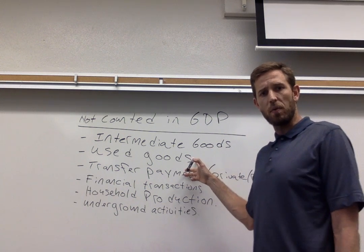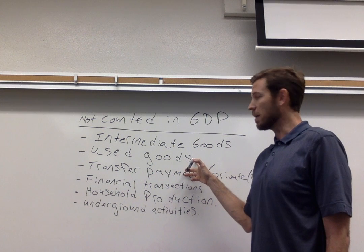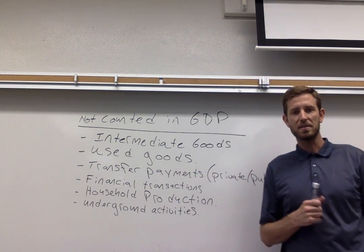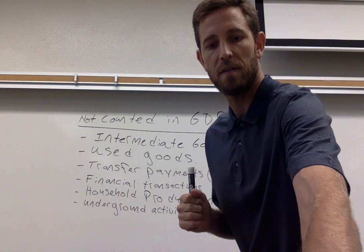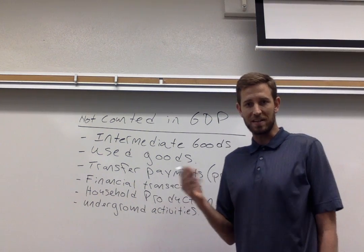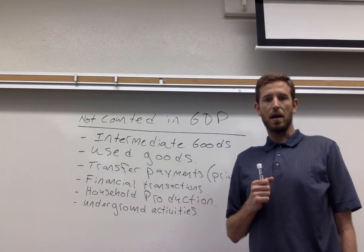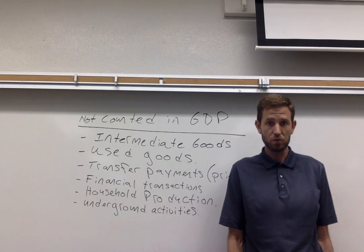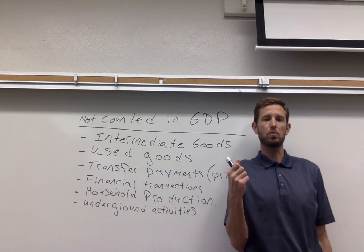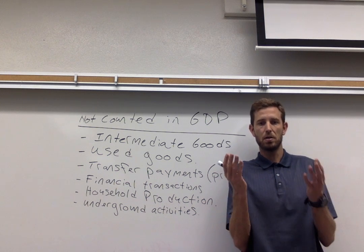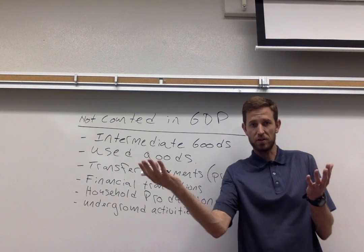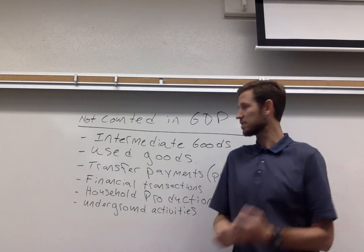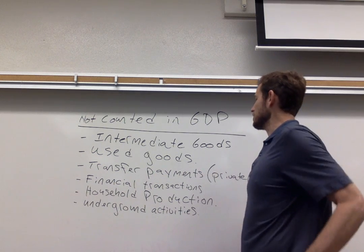The next item we want to remember not to count is used goods. The logic behind this is that these used goods have been counted presumably at some point in the past. Remember, with GDP we're trying to measure the value of everything that's produced. It'd be wrong to include the value of some item two times — when it's bought the first time as a new good, and then again if it's bought in a secondhand context. So we don't count used goods in GDP.